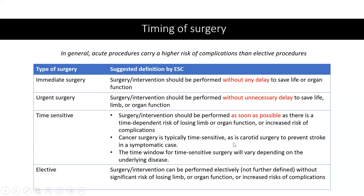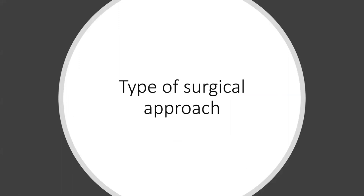The time window for time-sensitive surgery varies depending on the underlying disease. Elective surgery is surgery that can be performed without significant risk of losing limb or organ function. In the guidelines, immediate and urgent surgery are treated similarly, followed by time-sensitive and then elective procedures. To summarize: surgical risk is classified as less than 1%, 1-5%, or more than 5% MACE at 30 days; and surgery timing is classified as urgent, immediate, time-sensitive, or elective.